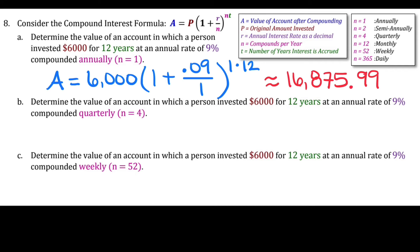Problem B says: determine the value of an account in which a person invested $6,000 for 12 years at an annual rate of 9% compounded quarterly. The only thing changing is N. So A equals 6,000 times the quantity 1 plus .09 over 4, raised to the power of 4 times 12. This gives us $17,457.84.